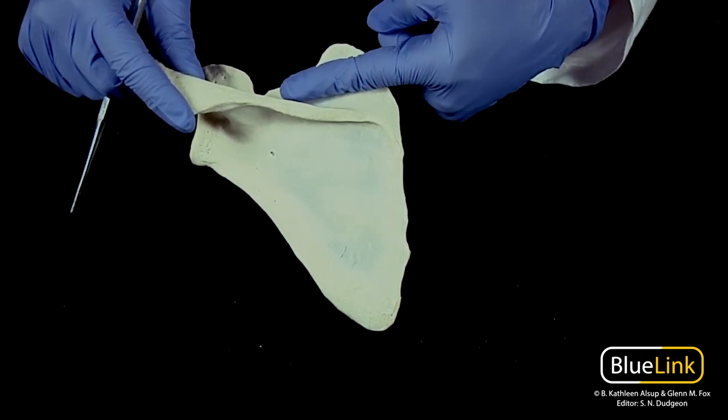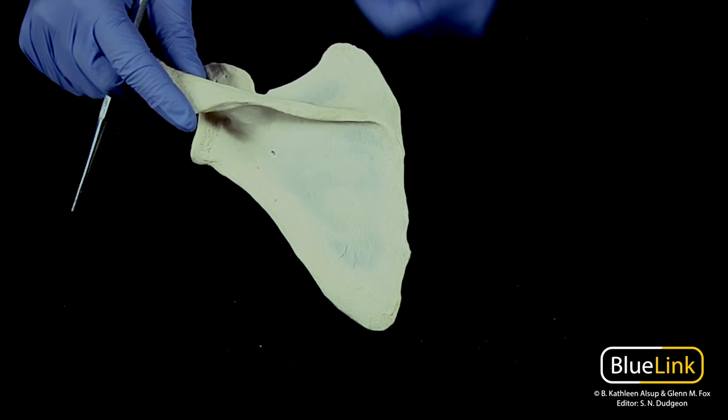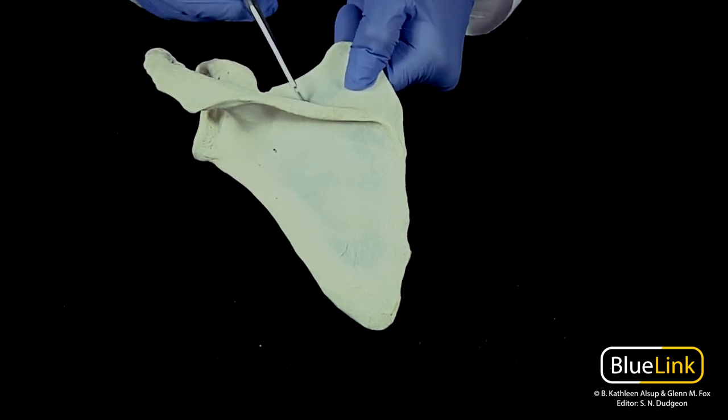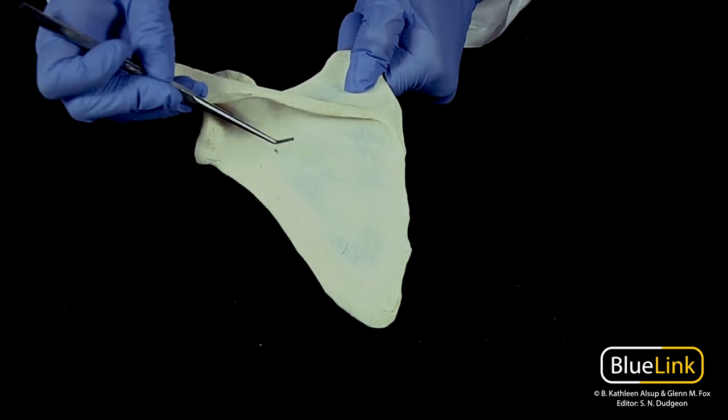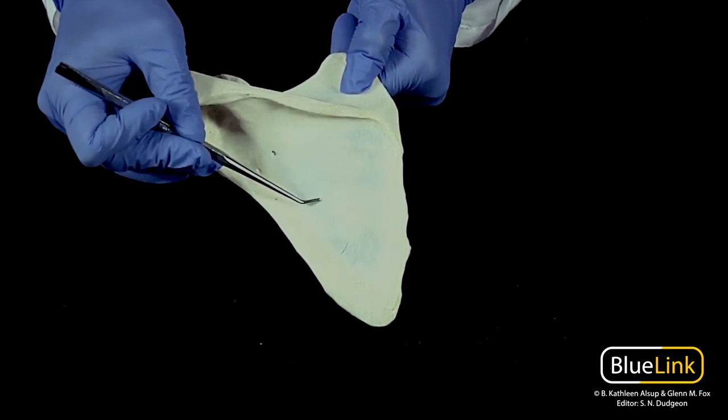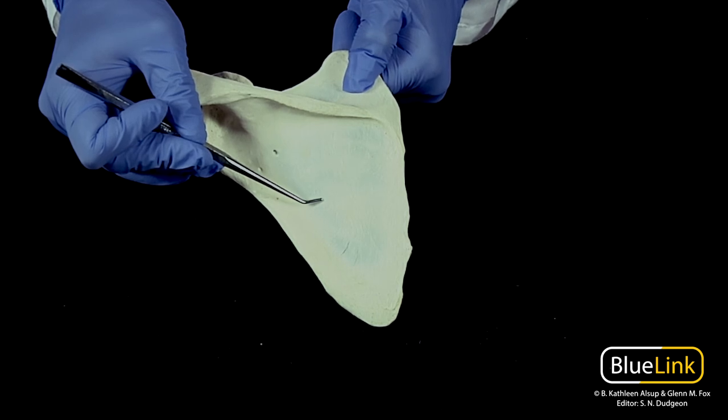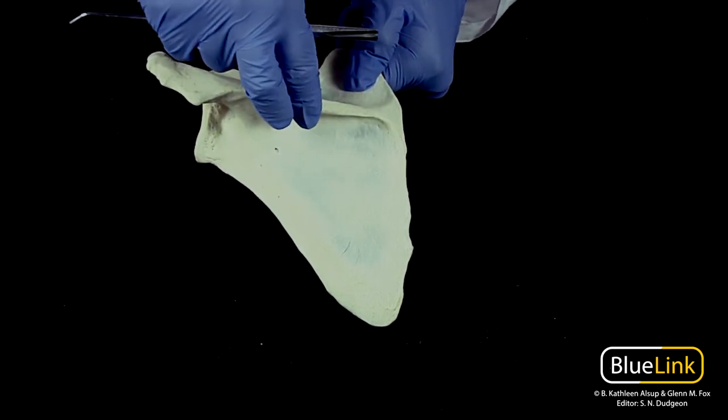The supraspinus fossa is going to be the origin site for the supraspinatus muscle, which is one of your rotator cuff muscles. Your infraspinus is going to be an attachment site for your infraspinatus muscle, also a rotator cuff muscle.